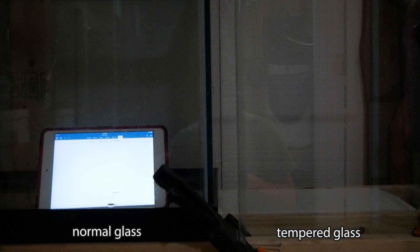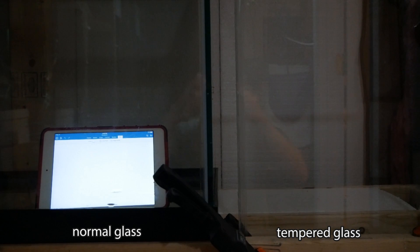In this setup, I have two pieces of glass. On the left is normal glass and on the right is tempered glass. Behind the glass, I have an iPad. An iPad emits polarized light so that when you put on polarized sunglasses, you can see the effects of the tempered glass. Here's a pair of polarized sunglasses from Walmart.